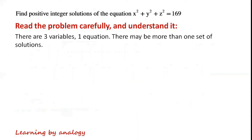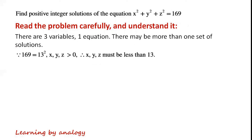There are three variables and one equation. There may be more than one set of solutions, because 169 equals 13 squared. X, Y, Z are greater than zero, so X, Y, Z must be less than 13.